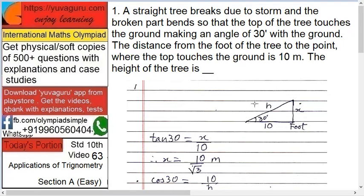See this, this is the tree. It has broken from here, made an angle of 30 degrees. Now you want the height, height means what? Of the tree. It means this x plus h, total of these will be the height of the tree.